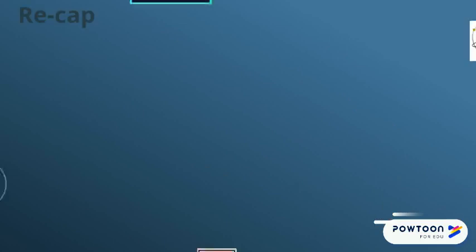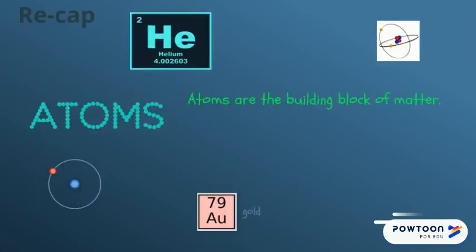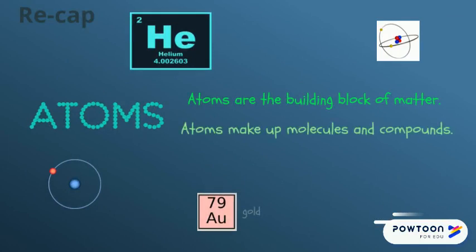Let's take a quick recap of what we know about atoms. Atoms are the building block of all matter. Atoms make up molecules and compounds. Each atom is unique — it has its own number of protons, neutrons and electrons.